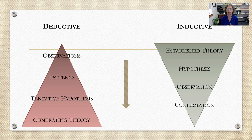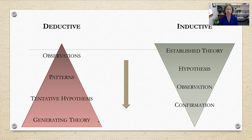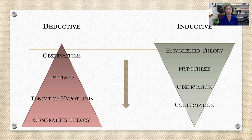There are two different ways of doing research. The deductive approach starts with observations, watches for patterns, develops a tentative hypothesis, and generates a theory — then tests it several times to see if modifications are needed. Typically we use the inductive approach: we start with an established theory, develop a hypothesis to test it, collect data, and either confirm or refute the hypothesis before going back to test the theory again with a new hypothesis.